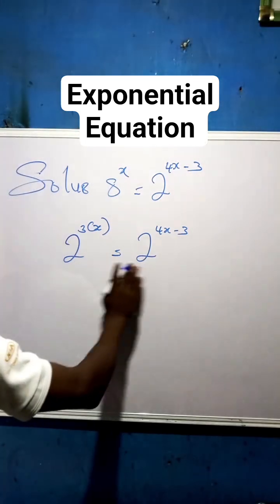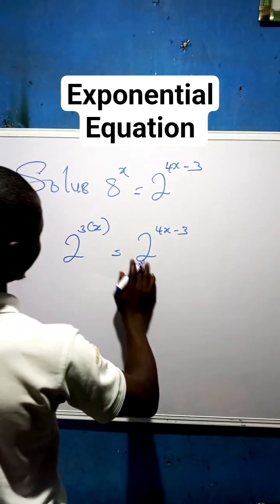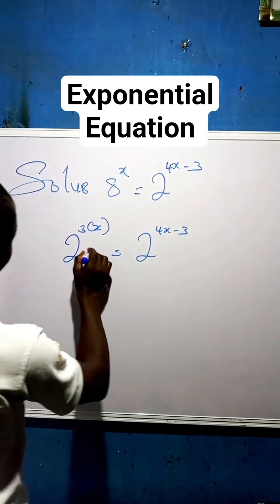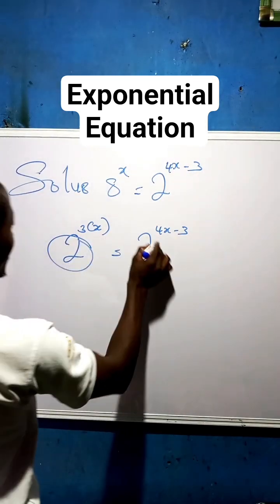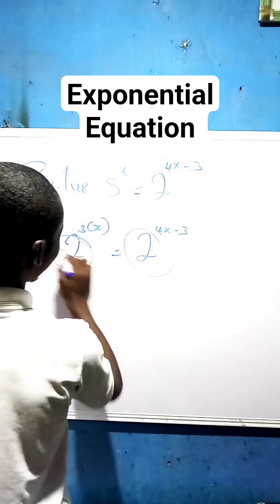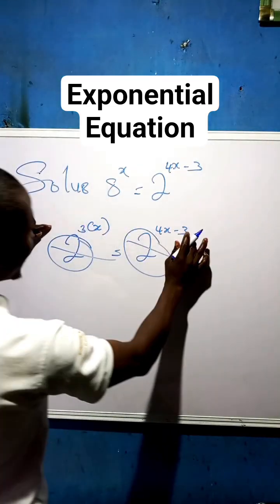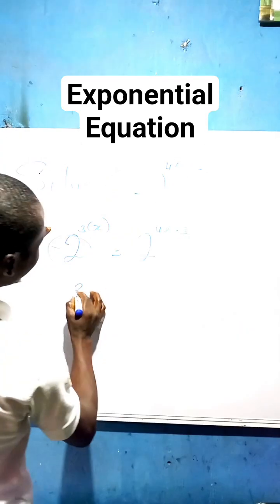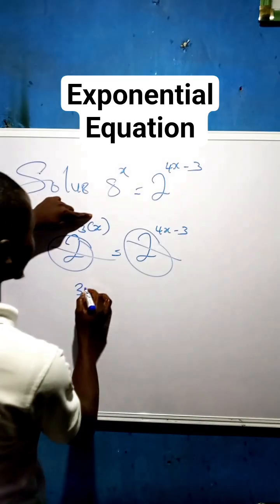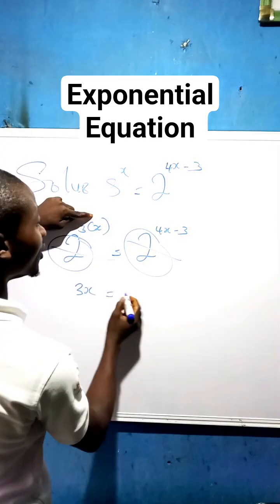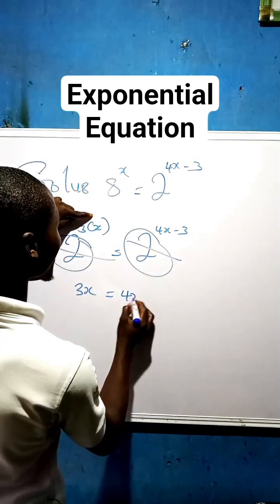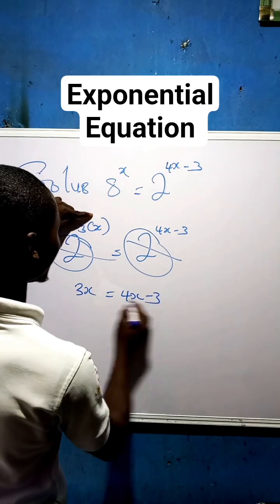Now we can see that we have the same base on both sides, and therefore we can equate the powers. We now have 3x equal to 4x minus 3.